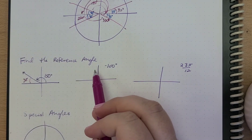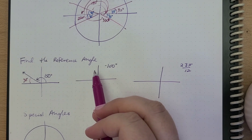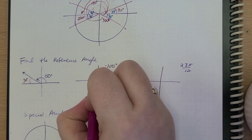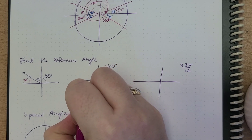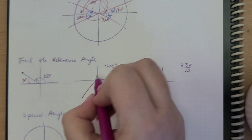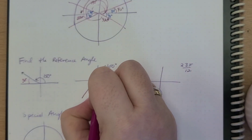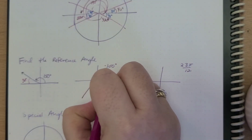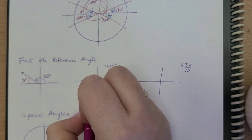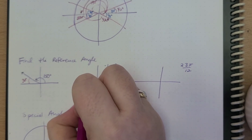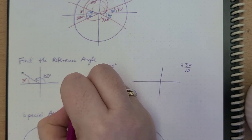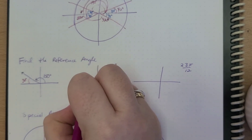What if we're given negative 100? Negative 100 is going to be like roughly here. So this is negative 100 degrees. We need to measure the distance here, which is 80 degrees, and that's going to be our reference angle.